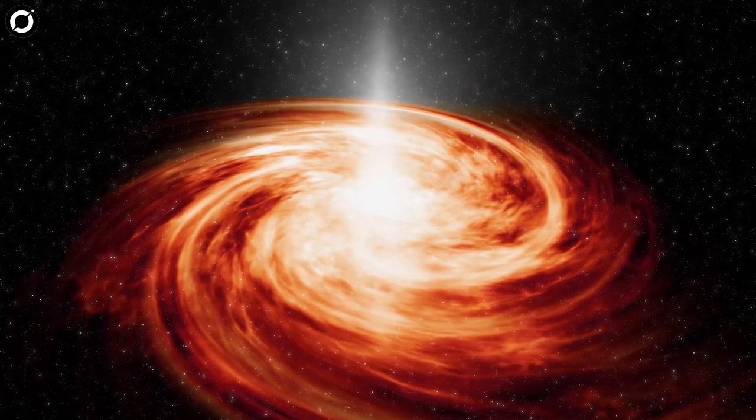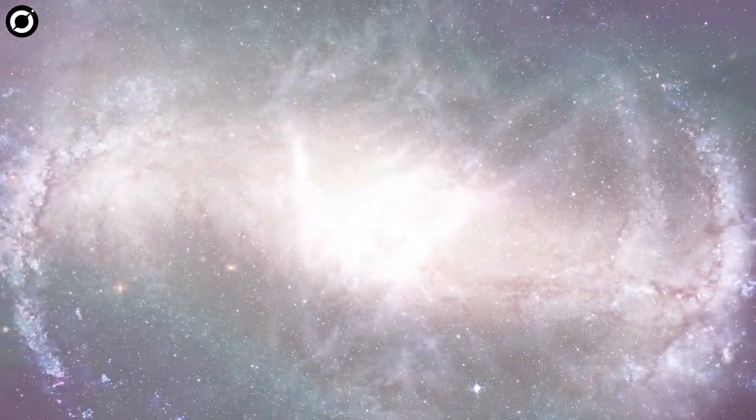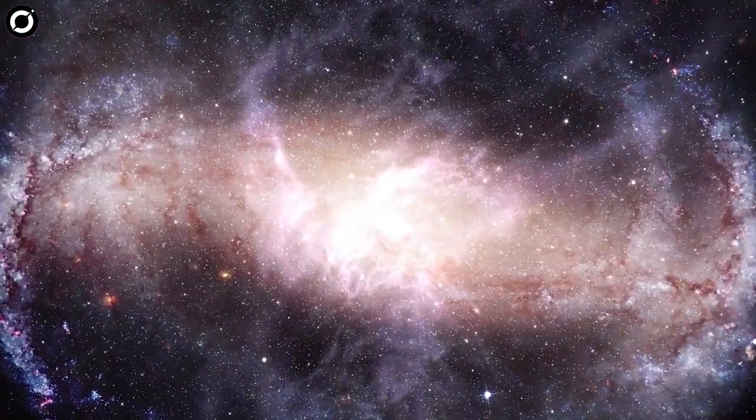Despite being around 10 times smaller than the Milky Way, GS-9209 has the same number of stars with a combined mass around 40 billion times that of our sun.